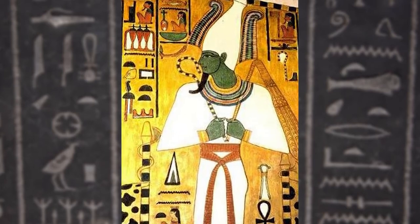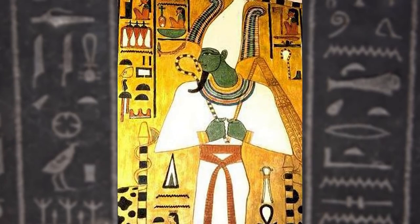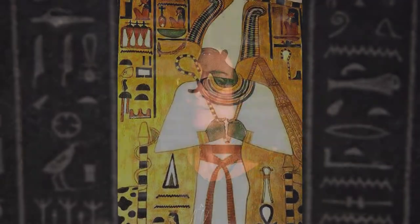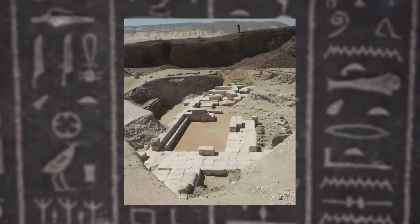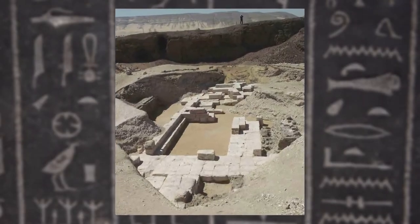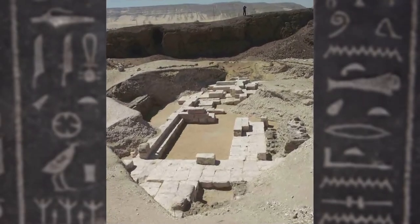Osiris is the god of the dead. There's a long myth that goes with Osiris, but basically he is murdered by his brother Seth, and then different parts of his body are spread around Egypt. So the idea comes about that he's buried at Abydos in Egypt.